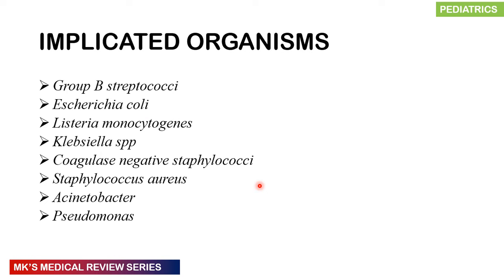Implicated organisms include group B Streptococcus (GBS), Escherichia coli, Listeria monocytogenes, Klebsiella species, coagulase-negative Staphylococcus, Staphylococcus aureus, Acinetobacter, and Pseudomonas. Keep these in mind because when we come to treatment, we use empirical therapy targeting these organisms — especially in settings where you can't get cultures quickly and you wouldn't want to wait for culture results.